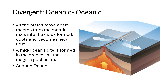Our first one is a divergent oceanic-oceanic crust boundary. When we name a plate boundary, there are three things: the direction it's moving — divergent meaning spreading apart, or convergent meaning coming together — and the types of crust. In this one, both plates moving apart are oceanic crust, as you can see in the diagram they are under the ocean. As the plates move apart, magma from the mantle rises into the crack formed and cools, becoming new crust.